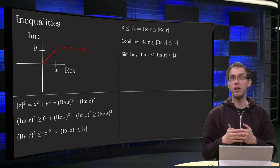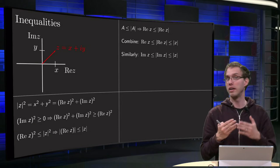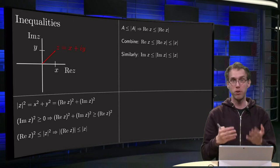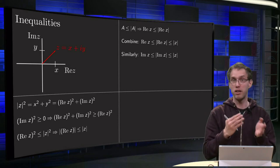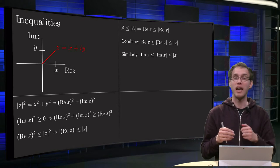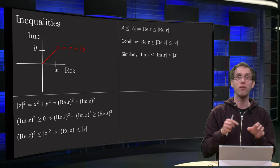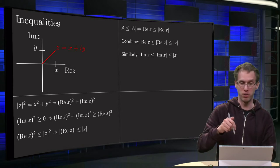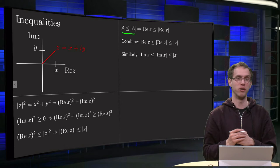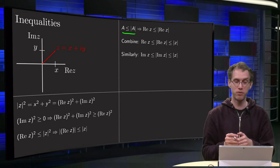Furthermore, for any real number — which is either positive or negative — if a real number is positive then a equals its absolute value, and if a is negative then a is always smaller than its absolute value. Combining those, for any real number we know that the real number is smaller or equal to its absolute value.